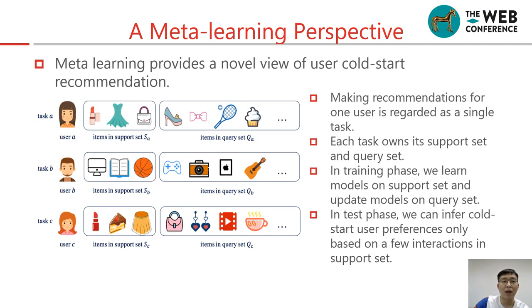MetaLearning provides a novel view of user cold-start recommendation. In MetaLearning setting, making recommendations for one user is regarded as a single task. Each task owns its support set and query set. In training phase, we learn models on support set and update models on query set. In test phase, we can infer cold-start user preferences only based on a few interactions in support set.